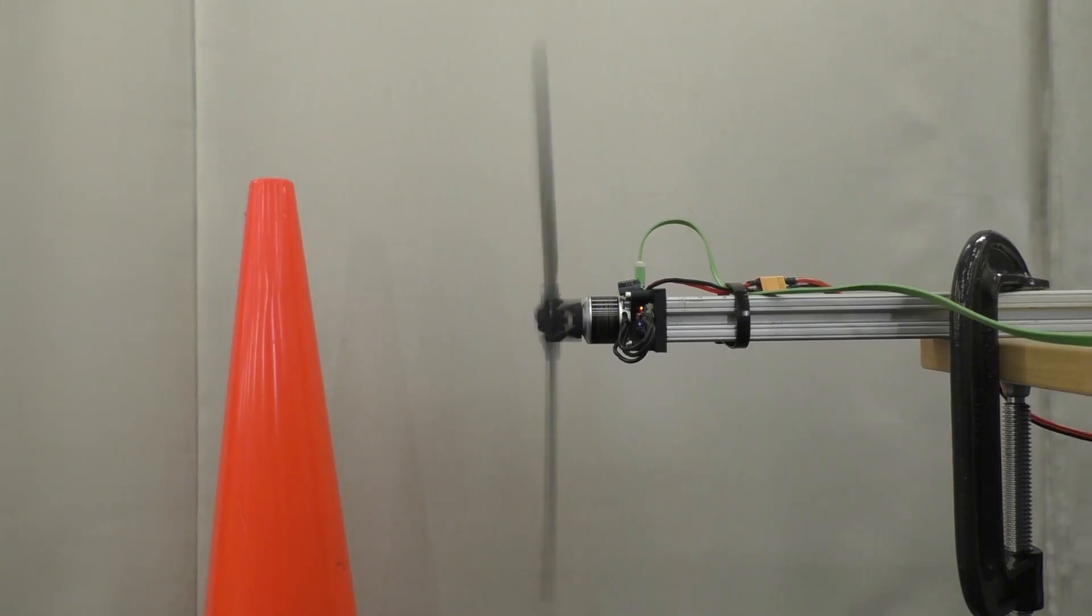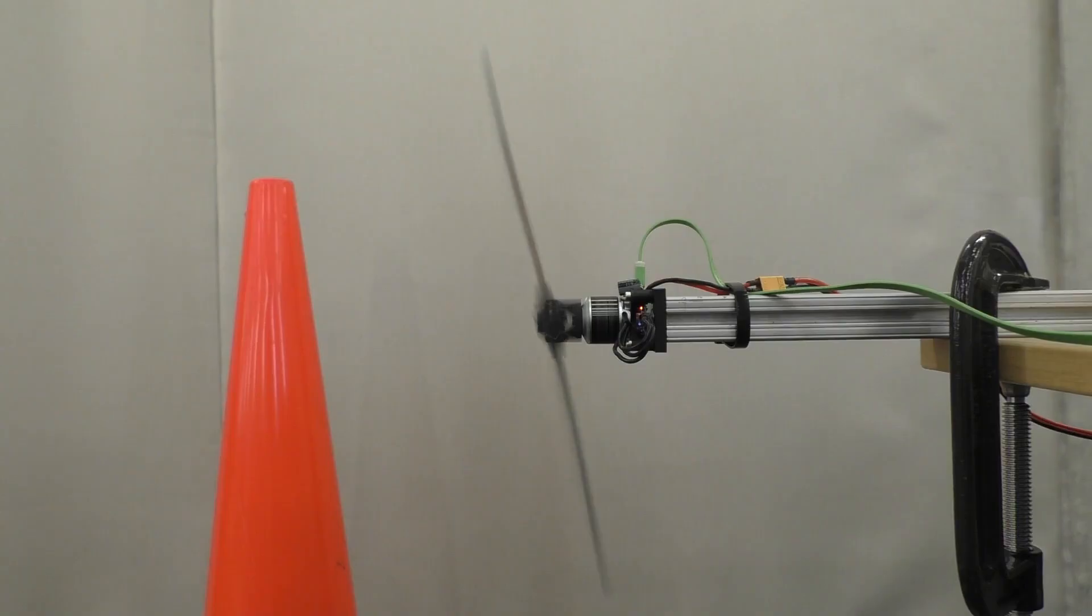A special flexible propeller allows us to control the tip path plane of a rotor simply by modulating the drive torque. The thrust vector remains perpendicular to the tip path plane and can be pointed in different directions. The rotor needs only one control input, the main drive motor.